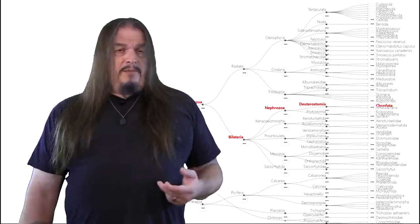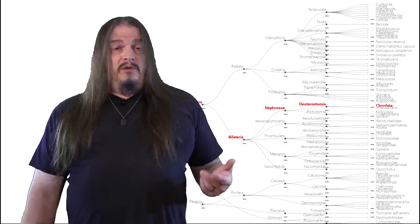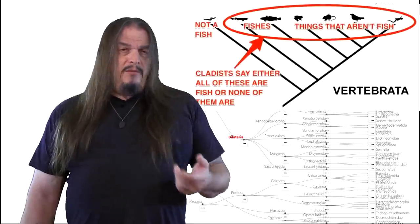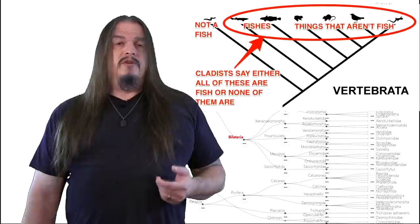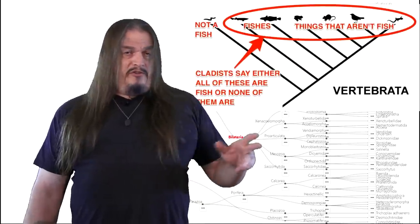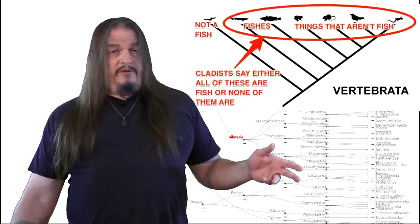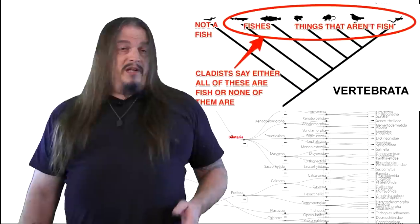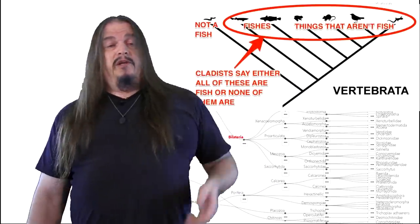If we accept lancelets and lampreys as fish, as some people do, then we should say chordates instead. In a monophyletic classification of life forms, there are two seemingly equally ridiculous options. Either there's no such thing as a fish in cladistic phylogenetics, or every chordate and everything that was ever descended from a chordate is still a fish, including you.